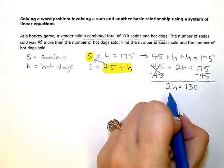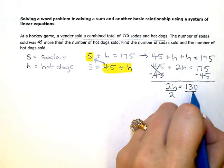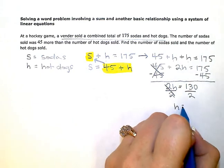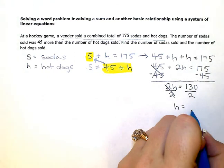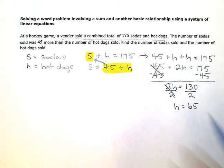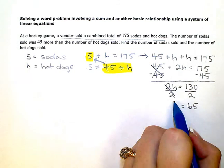Divide by 2. And I know the number of hot dogs is equal to 130 divided by 2 or 65. So there were 65 hot dogs.